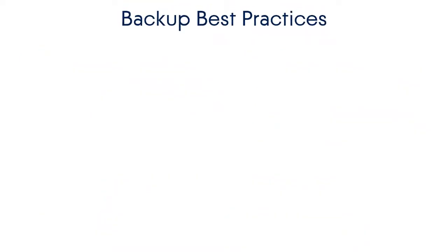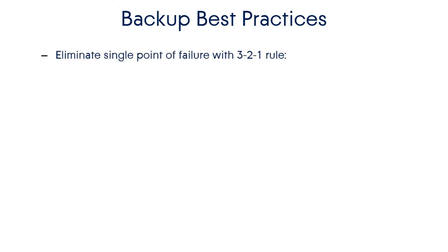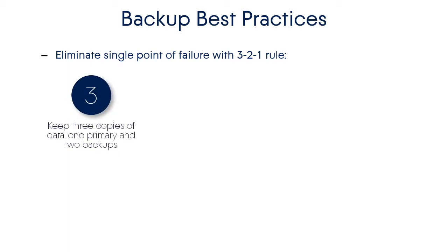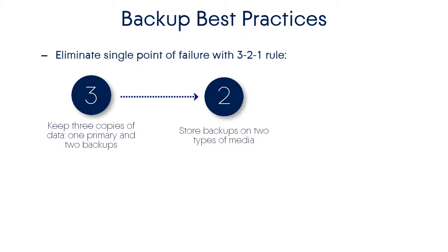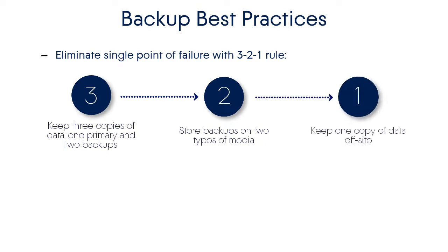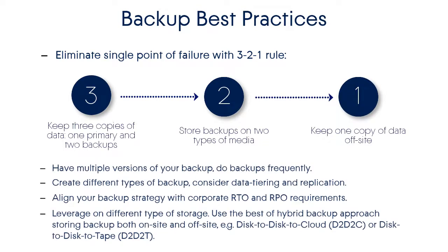We also want to recommend some best practices. It's best to employ the rule of 3-2-1 to avoid a single point of failure. You need to have three copies of your data — one that's the primary and then two backups. Then you need to have those two backups on two different kinds of media. And finally, you need to keep one of those copies of data off-site, but always keep one on-site for really quick recovery. Many people continue to ignore this rule and lose their data. Numerous lessons have been learned from attacks like WannaCry and Petya ransomware.